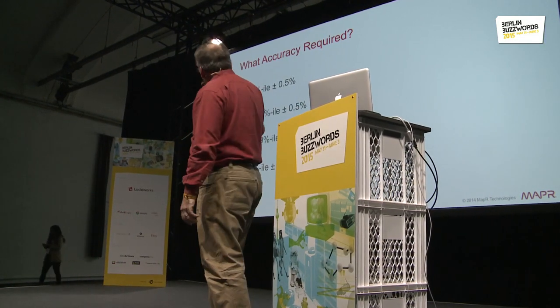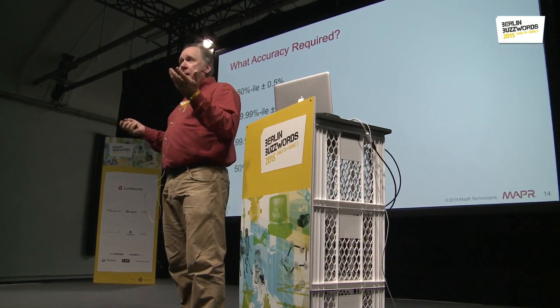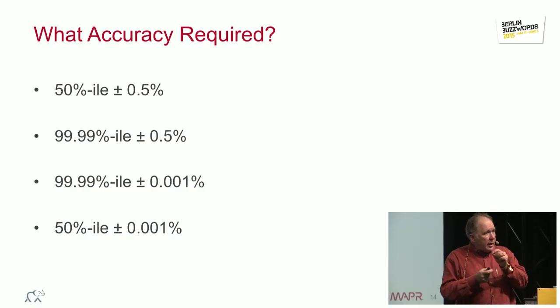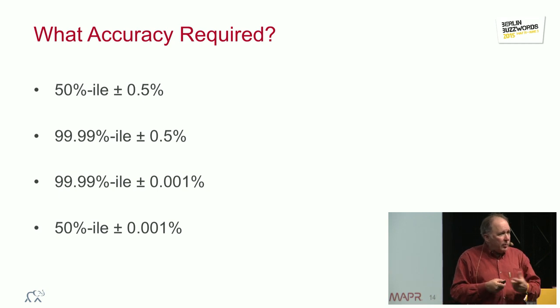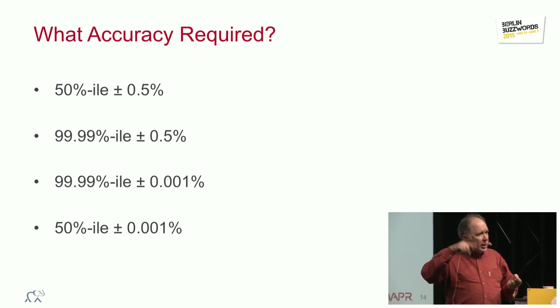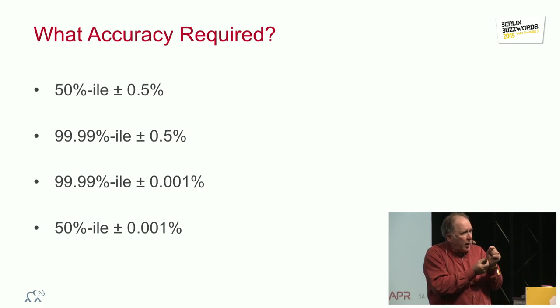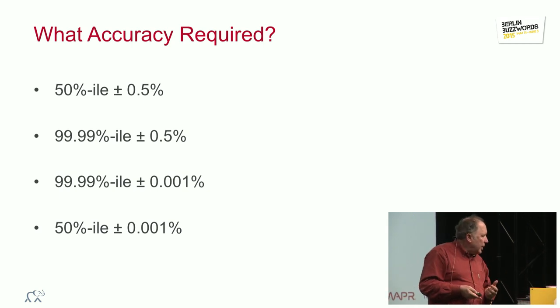Here's some examples. If we want to compute the median, which is the 50th percentile, plus or minus a half percent, so the true answer we get is somewhere between 49.5th percentile and the 50.5th percentile, that's probably okay. But the 99.99th percentile, plus or minus a half percent, makes no sense whatsoever because we're talking about something that's .001 away from the end, and yet we talk about errors that are much larger than that. So that makes no sense.